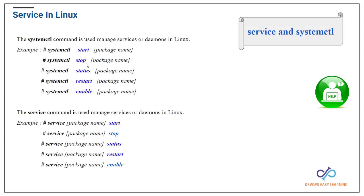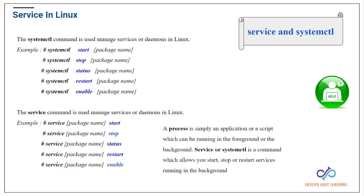The systemctl command is used to manage services or daemons in Linux. You use 'systemctl start' to start a service, 'systemctl stop' to stop it, 'systemctl status' to check if it's running, 'systemctl restart' to restart it, and 'systemctl enable' to enable it so it starts automatically when the server boots up.